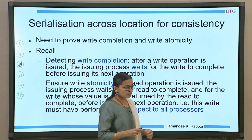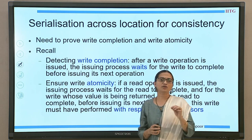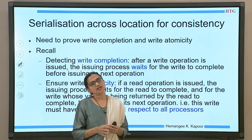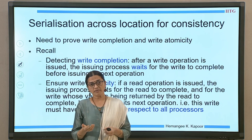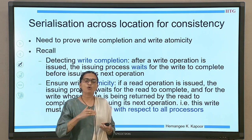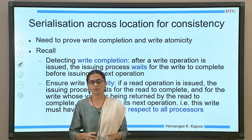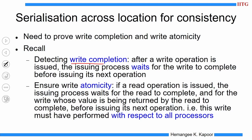Write completion means when a process writes to a particular location, it has to make sure that this write has reached all the nodes in the system before it is permitted to proceed with further instructions. Write atomicity means if a processor reads a value, it should be sure that the same value is visible to all the nodes — that is, the write whose value I am reading has reached all the processors. The write completion requires waiting for all processors to see this write before proceeding to the next operation.